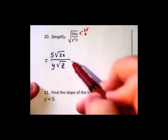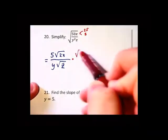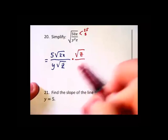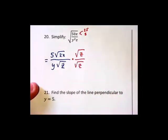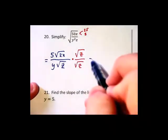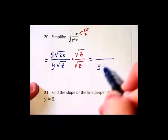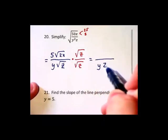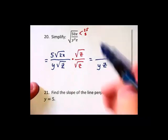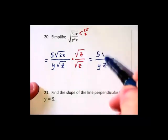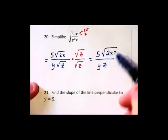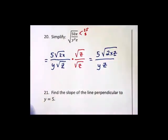Now I'm going to rationalize the denominator. It's easier once you've simplified first, multiplying by root z over root z. So down below we're going to have y times root z squared which just pulls out the z, and up above we've got 5 root 2xz, multiplying the radicands together.